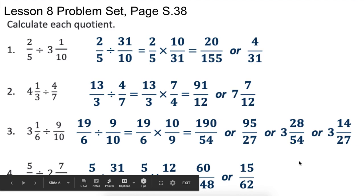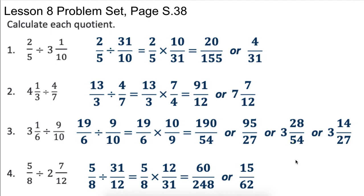We start with five-eighths. So we have five-eighths divided by two and seven-twelfths. Two times twelve would be twenty-four plus seven would be thirty-one. So we end up with five-eighths divided by thirty-one-twelfths. Then we end up with five-eighths times the reciprocal of that, which would be twelve-thirty-firsts. Then we multiply straight across. And then we simplify if we can.